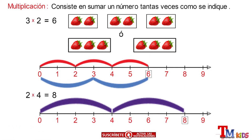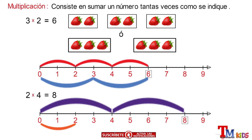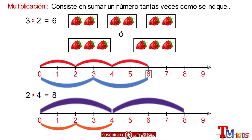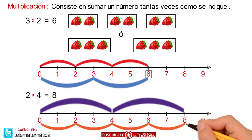And in second place, we will represent 4 times 2. In the same way, from 0 in the semicircle, we give a first jump of 2 units, a second jump of 2 units, a third jump of 2 units, and a fourth jump of 2 units, and we also reach the value 8. And in this way, we are doing the multiplication of natural numbers in the number semicircle.